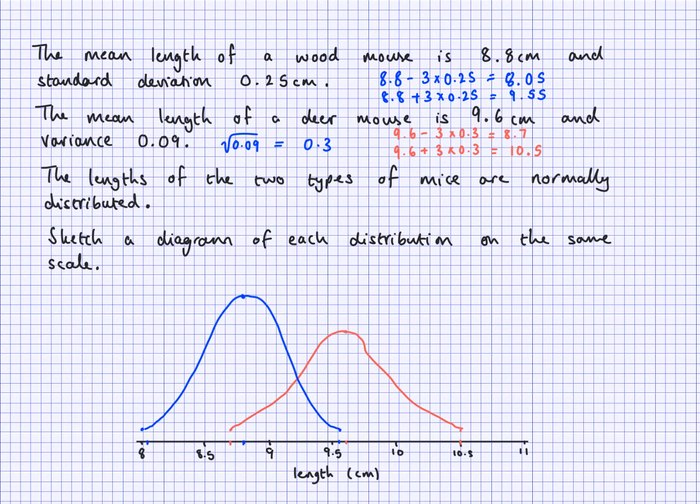So notice that we've got the bell shaped curve. I've gone to the mean here, the highest point and mean here, the highest point. This red one is a little bit more flatter, a little bit lower because the standard deviation is bigger. The blue one has a smaller standard deviation, therefore it goes higher.